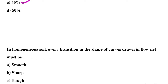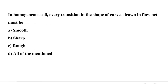Question 8: In homogeneous soil, every transition in the shape of curves drawn in a flow net must be — Option A: smooth, Option B: sharp, Option C: rough, Option D: all of the above. The correct answer is Option A: smooth.